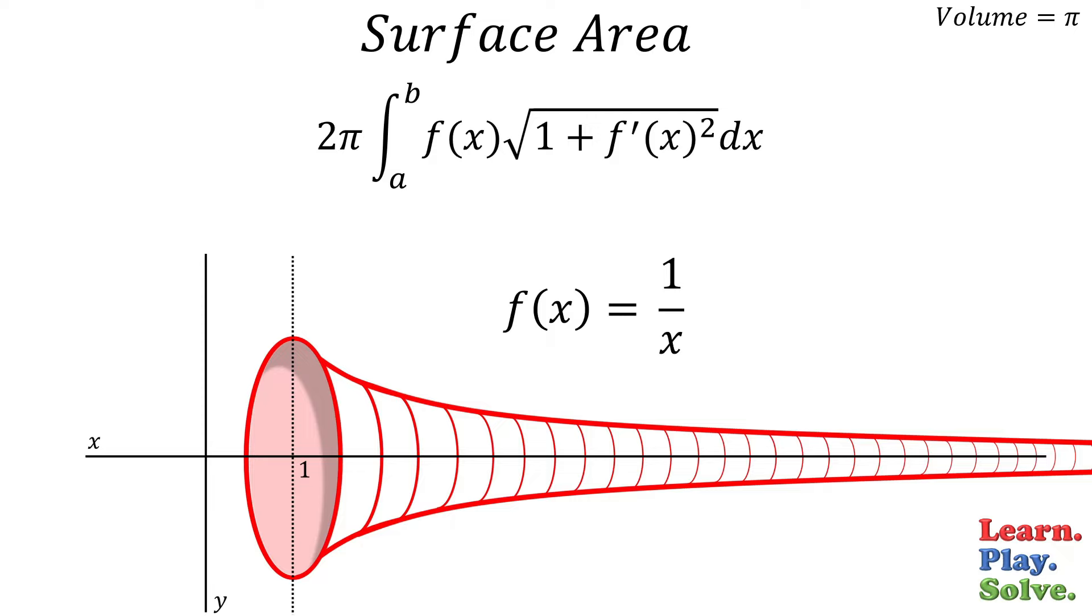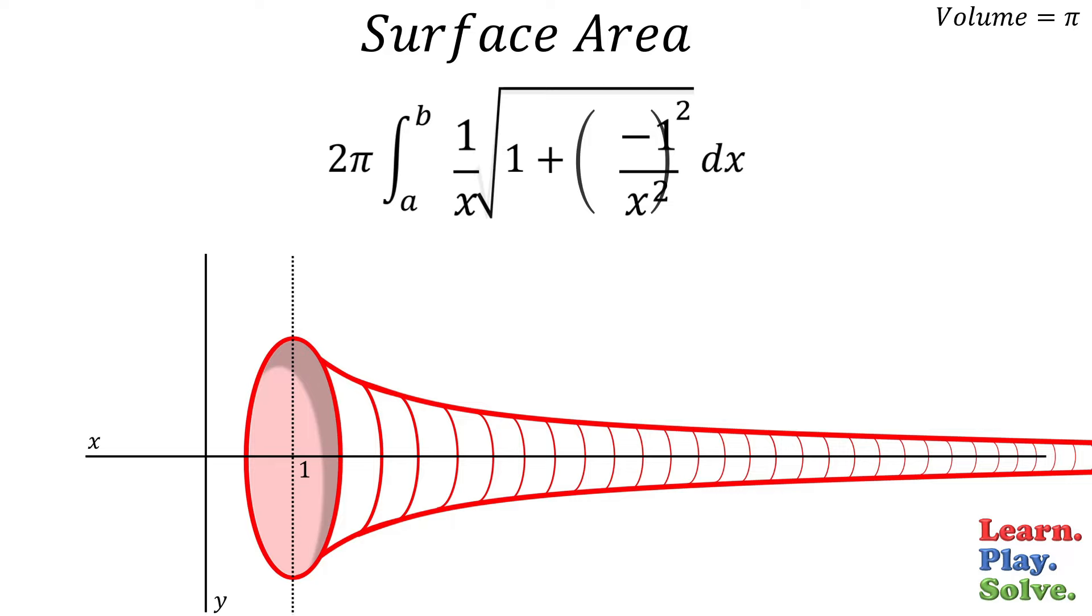Again, the function is 1 over x, but this time we're also going to need its derivative, which you can use the power rule to get negative 1 over x squared. So let's plug these functions into the integral. And again, the limits are 1 to infinity.